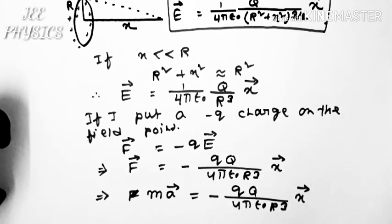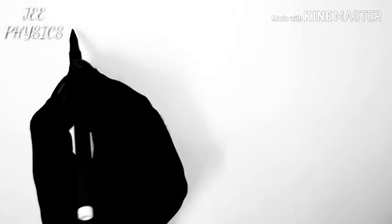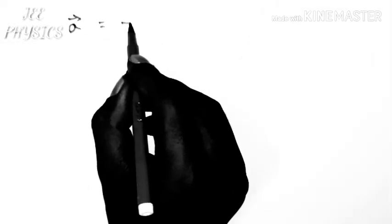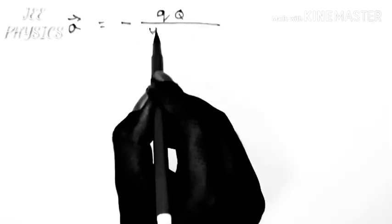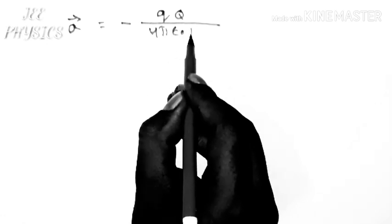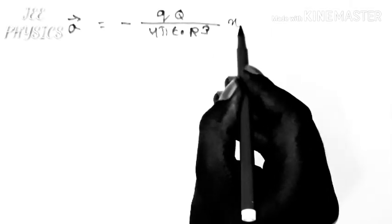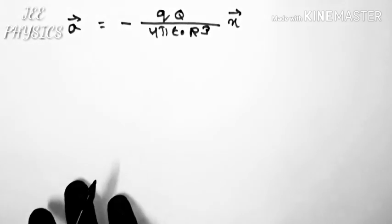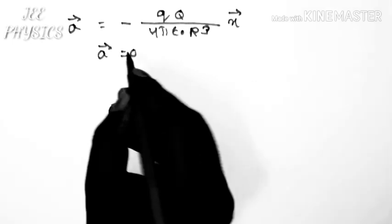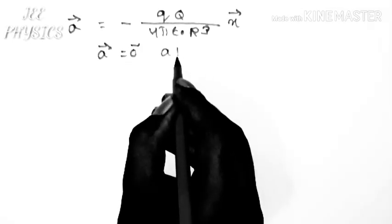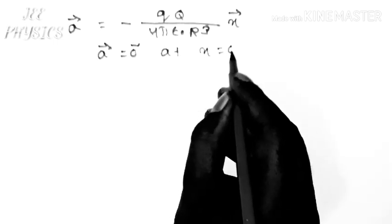Therefore we can write acceleration a is equal to minus q into q by 4 pi epsilon naught r cube into x. And also acceleration is 0 at x equal to 0.